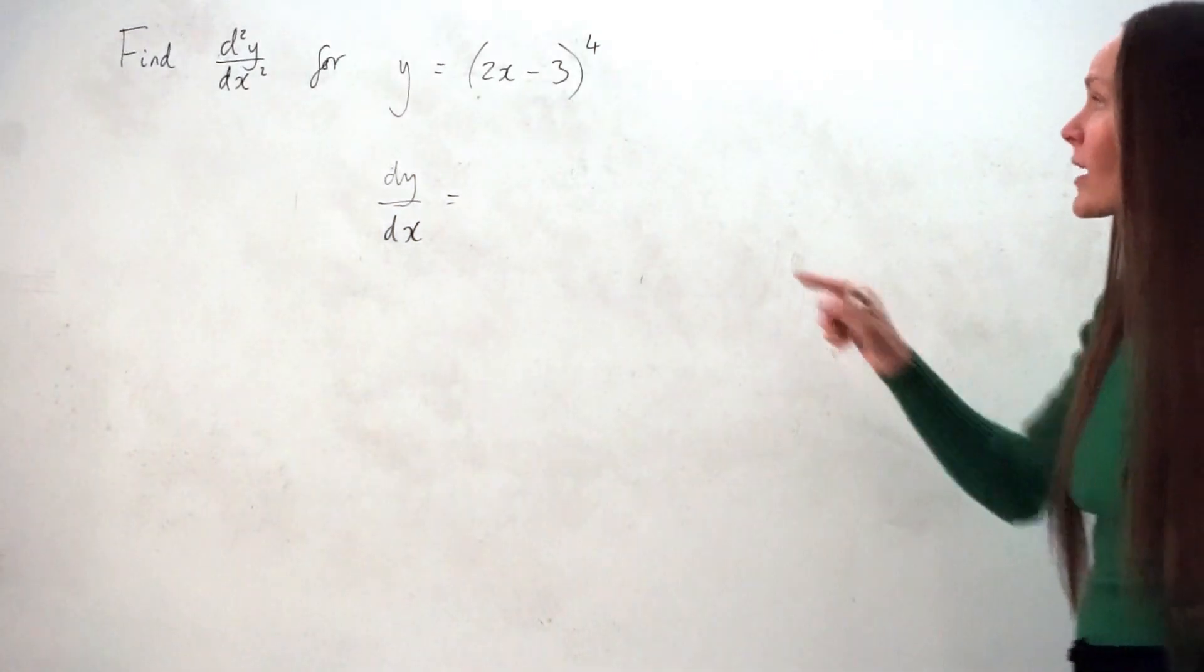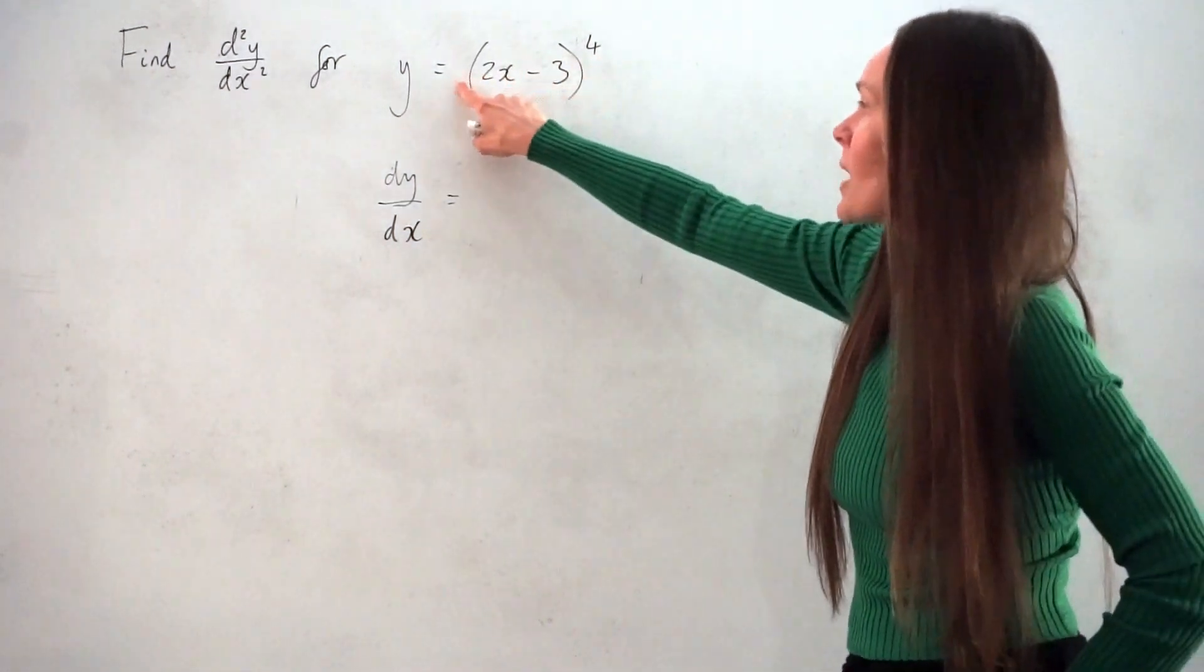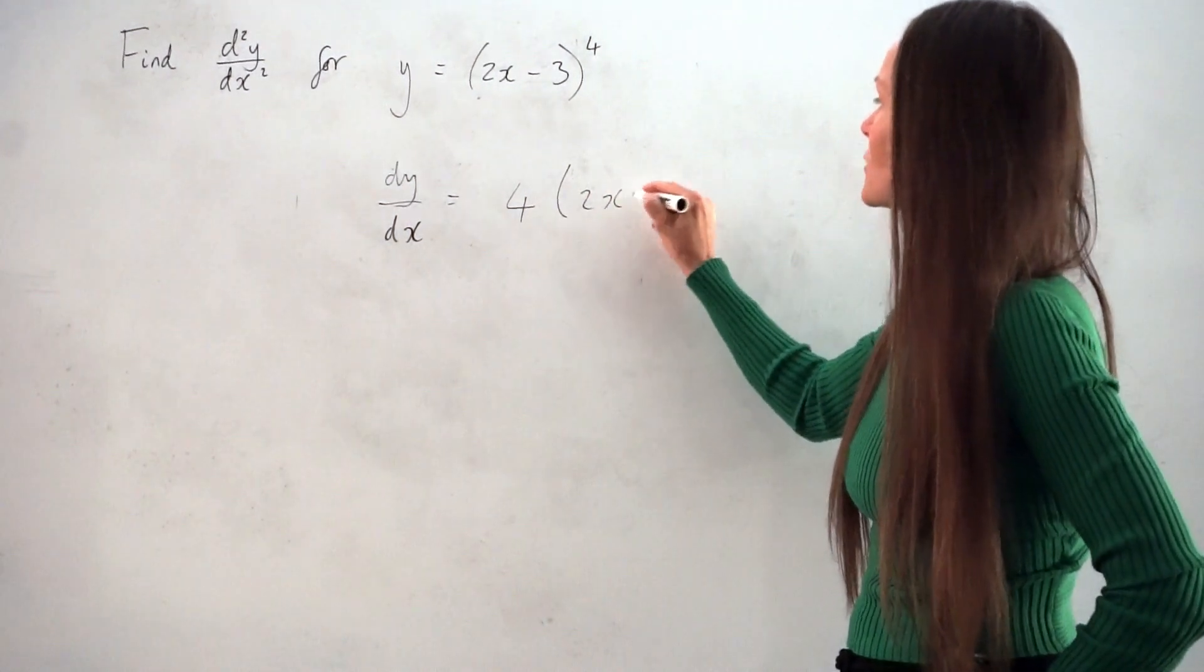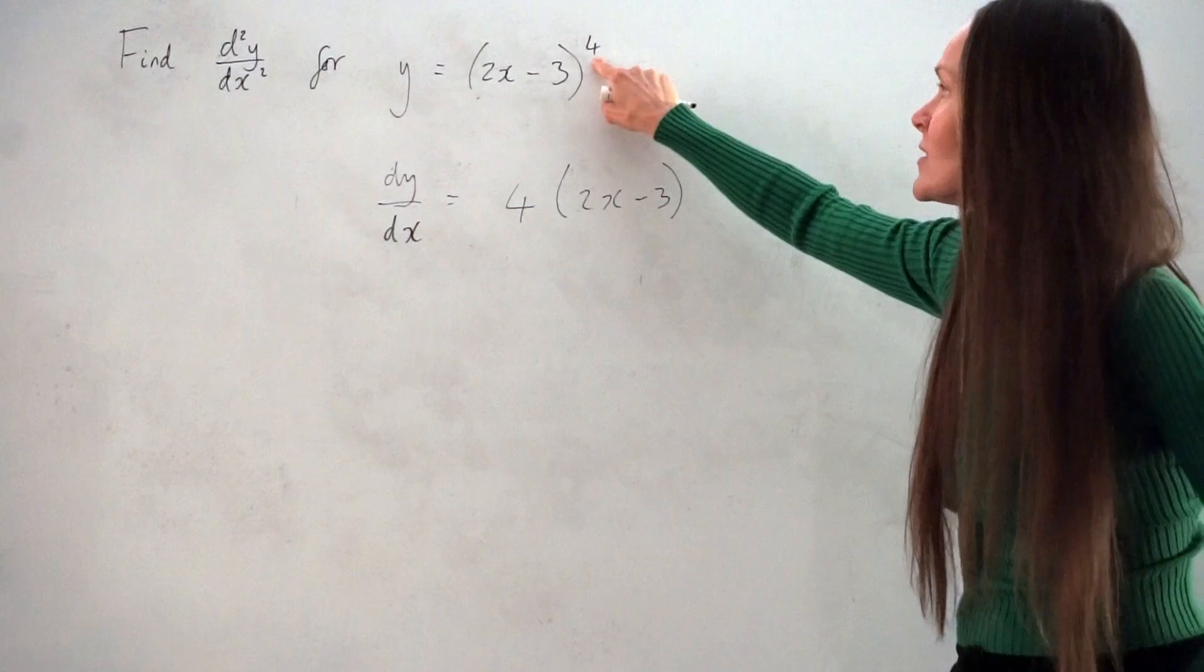So I'm going to start with the outside of the brackets. So look at this power here. 4 multiplied by these brackets gives us 4 lots of (2x - 3). Similarly, not forgetting to decrease this power by 1, so we're left with cubed.